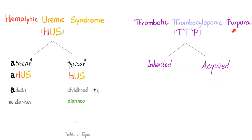Hemolytic uremic syndrome and thrombotic thrombocytopenic purpura are very similar — some people consider them a continuum. HUS is either atypical or typical; TTP is either inherited or acquired. Atypical HUS happens in adults and there is no diarrhea. Typical HUS happens in childhood — it has diarrhea. If you ask an adult when was the last time they had diarrhea, maybe a year ago. If you ask a toddler, they might say they have diarrhea right now.